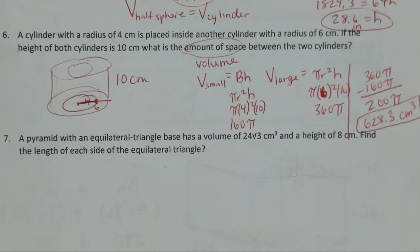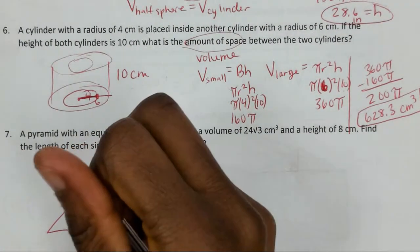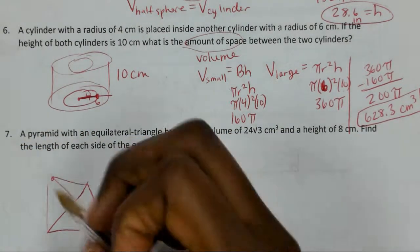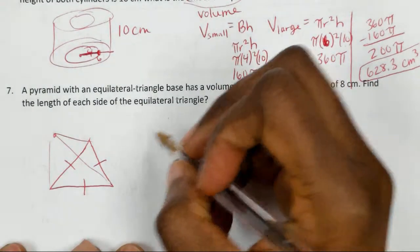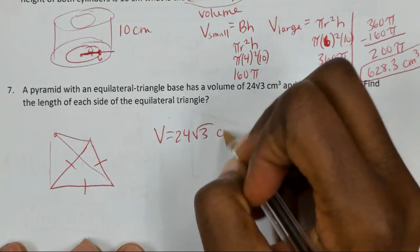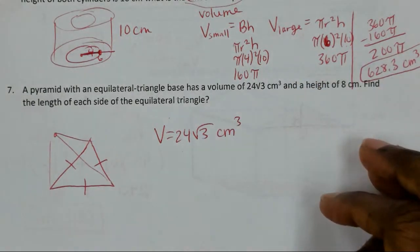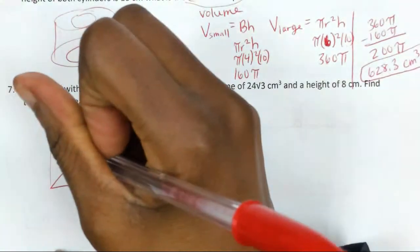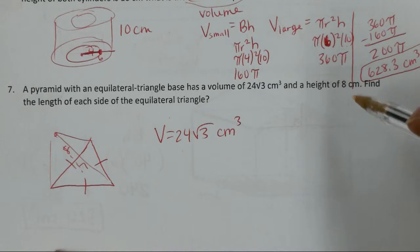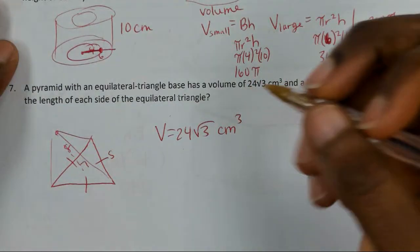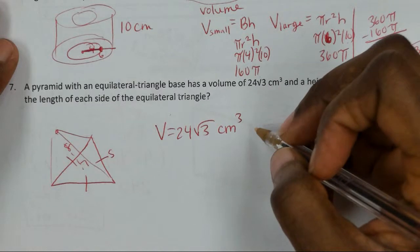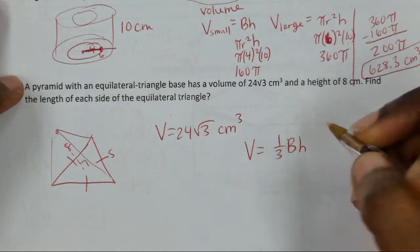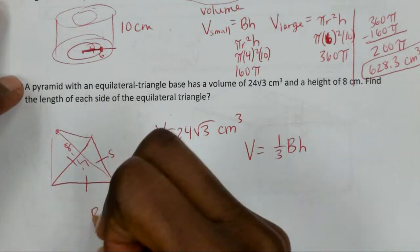A pyramid with an equilateral triangular base has a given volume and a height of 8 centimeters. We need to find the length of each side of the equilateral triangle. The volume formula for a triangular pyramid is one-third capital B times H, where B is the area of the triangular base.